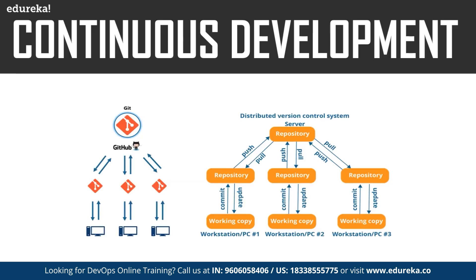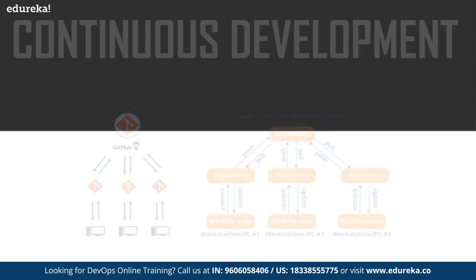So why do we use Git? Imagine if the main server or main repository crashes or is unavailable. In such a scenario, the local repository still has the code for your application. This is a key advantage of using tools such as Git. So this was all about continuous development.